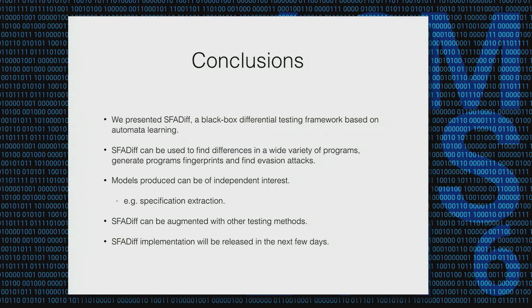To conclude, we presented SFA-DIF — a black box differential testing framework based on automata learning. We used it to find differences in a variety of programs, generate program fingerprints, and find evasion attacks. The models produced can be of independent interest as approximations of specifications. This is not orthogonal to other testing methods — tools like AFL or AFL-FAST can be used to augment these tools, finding discrepancies between the model learned by SFA-DIF and actual implementations, and using those inputs to further refine the process.